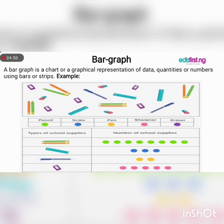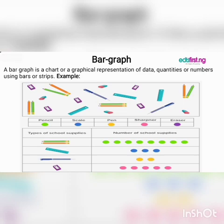We have a good example here. These are some stationery used by students: pencils, erasers, cleaners, rulers. By counting the number of pencils, there are 8. The number of rulers is 3. The number of erasers is 2. The number of sharpeners is 5. Now we go on to plot the bar graph.